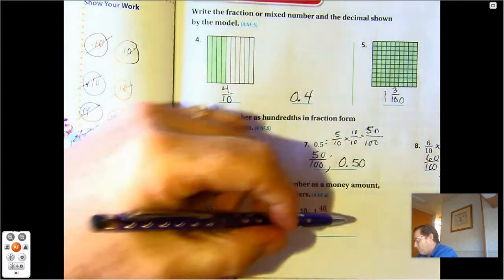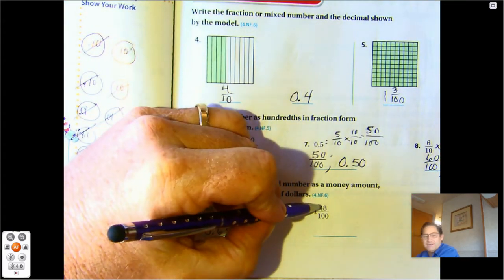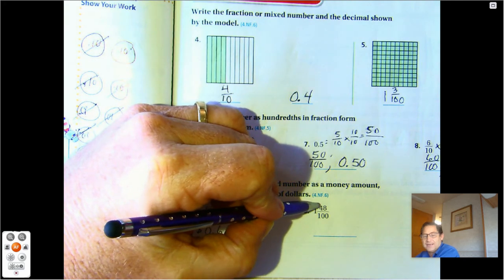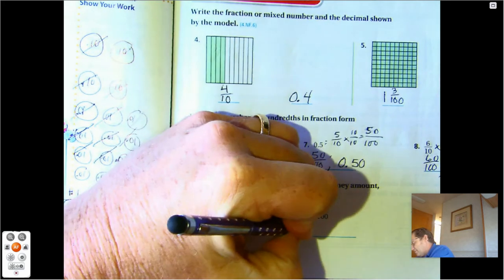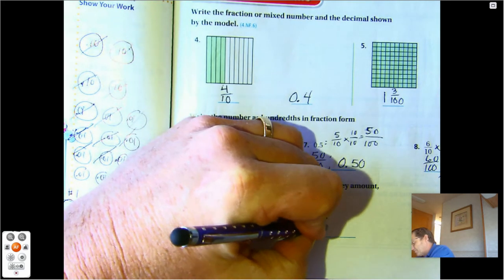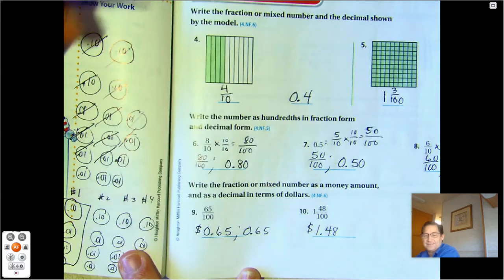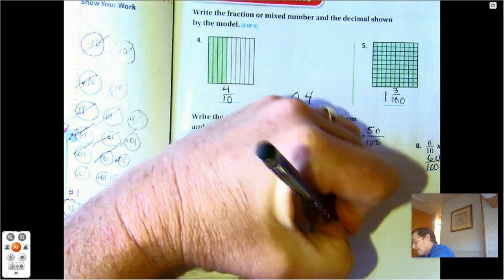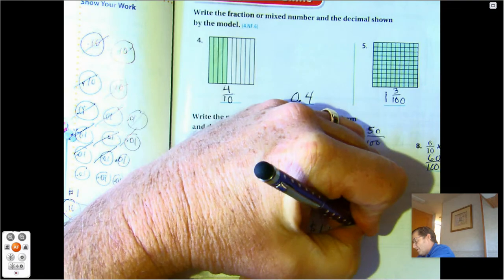Number ten, we have one whole and then we have a second part that is less than a dollar. So we have one dollar and forty-eight cents. As a decimal, it's just 1.48.